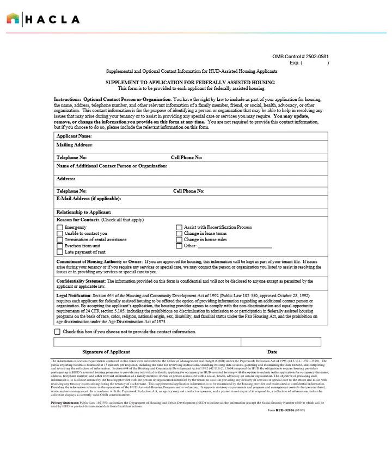Applicants have the right by law to include as part of their application for housing the name, address, telephone number, and other relevant information of a family member, friend, social, health, advocacy, or other organization. This contact information is for the purpose of identifying a person or organization that may be able to help in resolving any issues that may arise during tenancy or to assist in providing any special care or services that are required. An applicant may also check a box if they choose not to provide that contact information. Every head of household must sign and date this form.